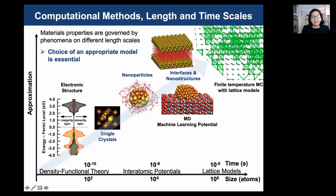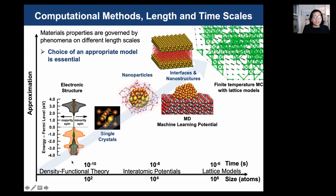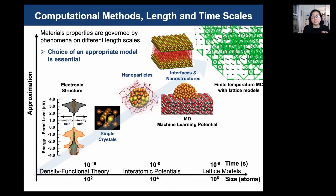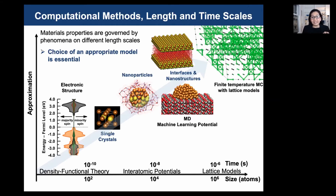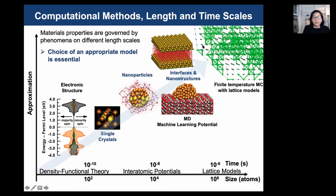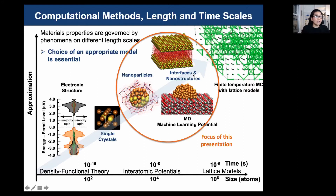Many material properties such as stabilities, structures, or reactivity are determined on electronic or atomic scales. Density functional theory, or DFT, is based on first principles and gives robust predictions for small structural models with a few hundred atoms. For nanostructures and molecular dynamics simulations, DFT is computationally too demanding. We are developing machine learning models which are efficient and accurate for such applications, and for larger scales we apply lattice models. In this talk I will focus on the intermediate scales and machine learning potentials.